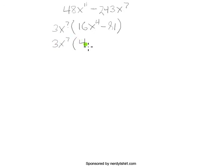And it's going to be 4x squared minus 9 and 4x squared plus 9. And then the sum of squares here can't be factored any further.